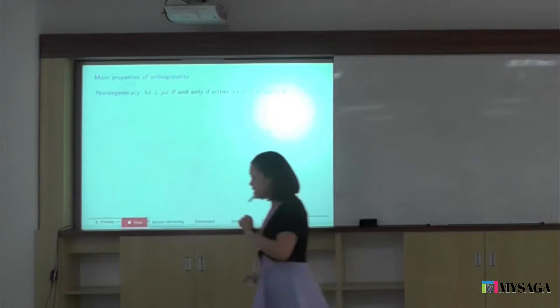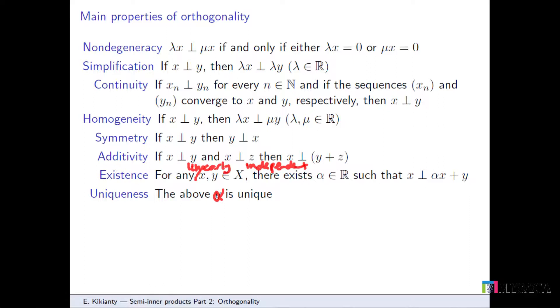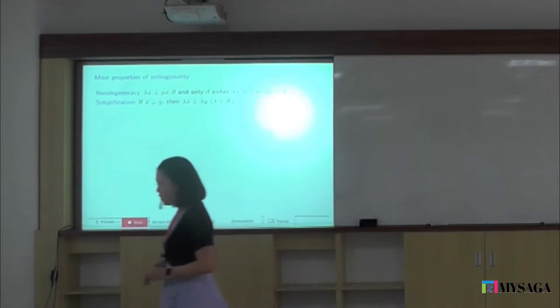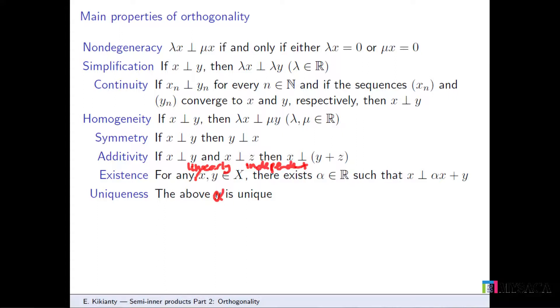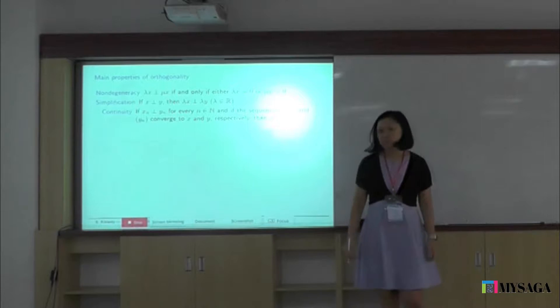Then you have things like simplification: if x is orthogonal to y, and I multiply both vectors with some lambda, then they're still orthogonal. Continuity: if you have sequences of vectors orthogonal to each other, and each of these sequences converge to something x and y, then if x_n is orthogonal to y_n, then x is orthogonal to y. This is certainly true in inner product spaces.